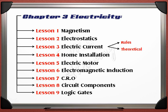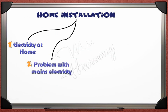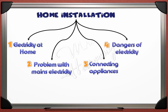This lecture is about the fourth lesson in the chapter. After finishing lesson 1 Magnetism, lesson 2 Electrostatics, lesson 3 Electric Current in two lectures — the Rule lecture and the Theoreticals lecture — it's time now for the fourth lesson: Home Installation. Here we will explain and discuss four titles: Electricity at Homes, Problems with mains electricity, Connecting Appliances, and finally the Dangers of Electricity.